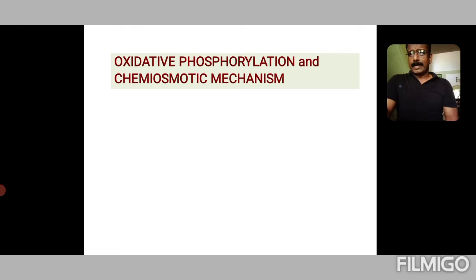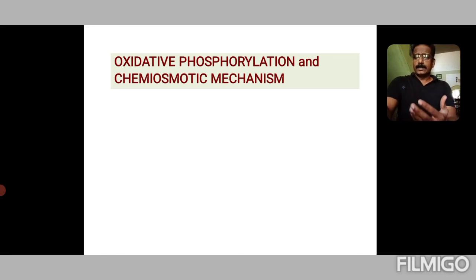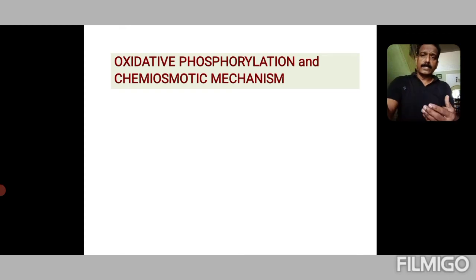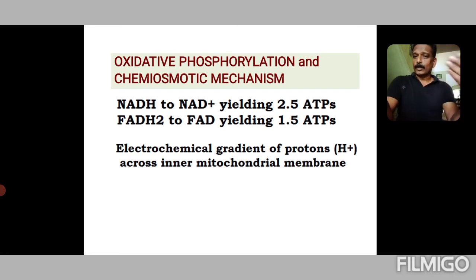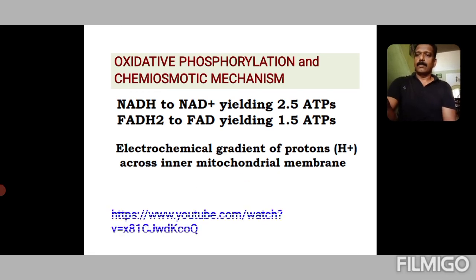Now let us examine another process — oxidative phosphorylation and the chemiosmotic mechanism — which is a much more elaborate mechanism for the generation of ATP. In fact, 30 or 32 ATP are produced per glucose molecule. This involves the generation of reduced molecules, namely NADH and FADH2, through metabolic processes. These molecules are channeled to the electron transport chain to create an electrochemical gradient of protons across the inner mitochondrial membrane. The energy of this proton gradient is used for the synthesis of ATP using ATP synthase.